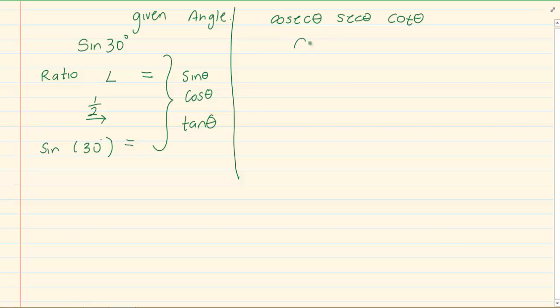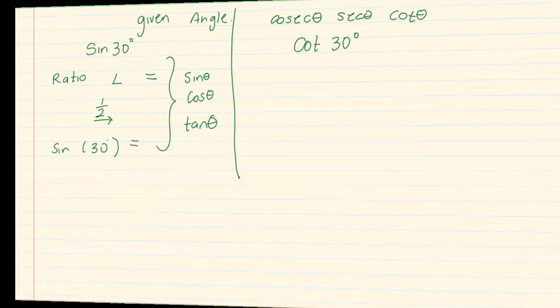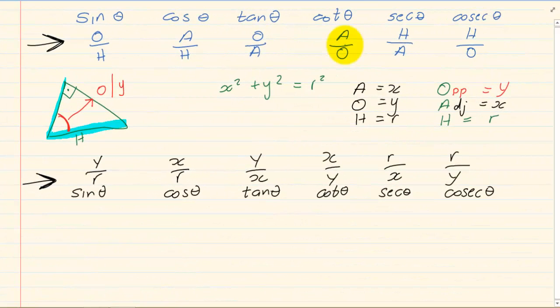So if you are given cot 30, you know from your previous knowledge that cot is the reciprocal of tan. It's basically tan turned upside down.